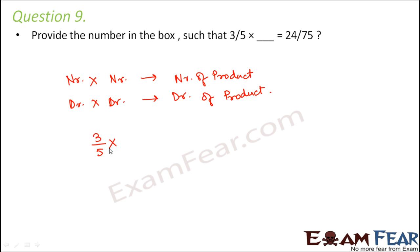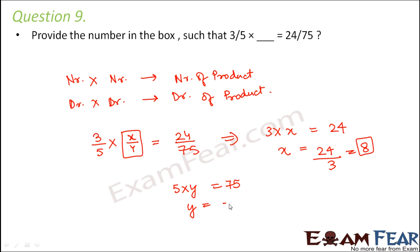So in this case we have 3/5 multiplied by something which we don't know. So let us assume that the something is say x/y which is equal to 24/75. So this actually means that 3 into x is equal to 24. So how will you find x? So that means 3 multiplied by something gives 24. That means that something is equal to 24 divided by 3 which is equal to 8. So x is 8. What about y? 5 multiplied by y gives 75. So y is equal to 75/5 and this is equal to 15. Therefore the number in the box would be 8/15. So this would be the number in the box.